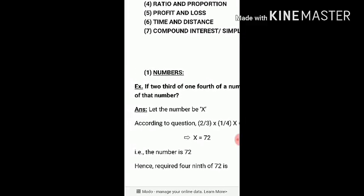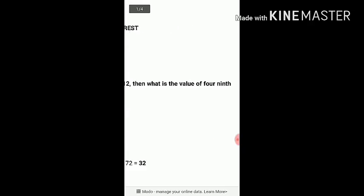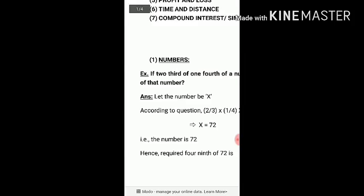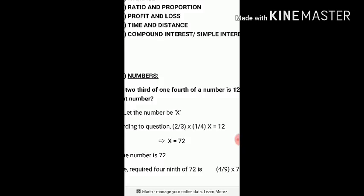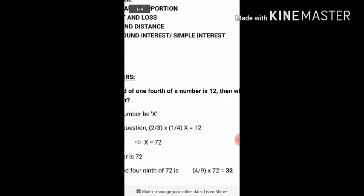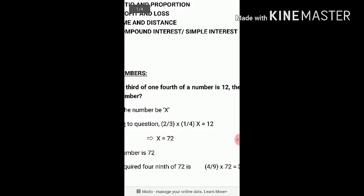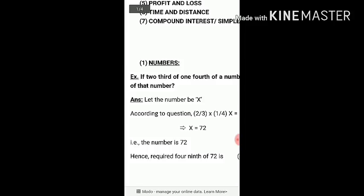If 2/3 of 1/4 of a number is 12, then what is the value of 4/9 of that number? The question says 2/3 of 1/4 of a number equals 12. That means 2/3 multiplied by 1/4 of some number x. So first I'd consider the number as x.